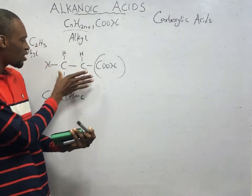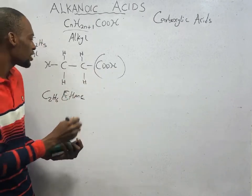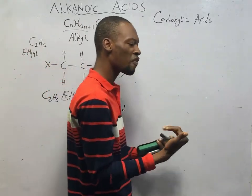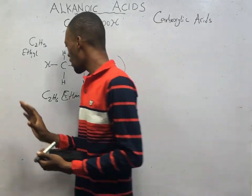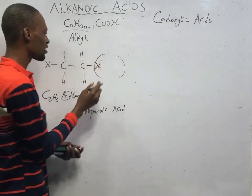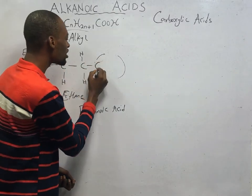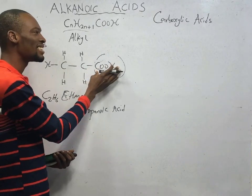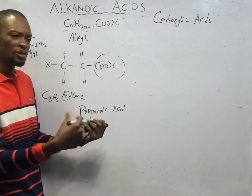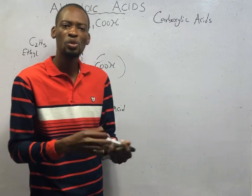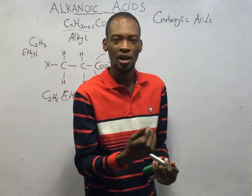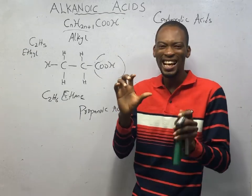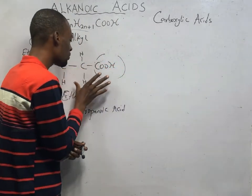To name an alkanoic acid, you simply count the total number of carbons including the carbon in COOH. For example, if you have C₂H₅ plus COOH, that gives you 3 carbons total — so this is propanoic acid. The C in the COOH adds to the other carbons when naming. So: 1 carbon = methane, 2 = ethane, 3 = propane, 4 = butane, 5 = pentane, 6 = hexane, 7 = heptane, 8 = octane, 9 = nonane, 10 = decane.